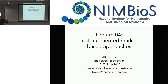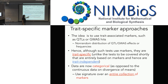Then we'll come back Thursday and Friday and talk about marker-independent methods where I measure a trait and then try to measure individual fitness and look for correlations between those. So I gave you that overview of different approaches we can have to detect selection. This is kind of like a hybrid — I basically have marker information that's based upon what I know about a given trait. The basic idea is to use trait-associated markers such as QTLs or GWAS, and ask whether there's a non-random distribution of QTL or GWAS effects or frequencies. Even though these tests use markers, they are trait-specific.